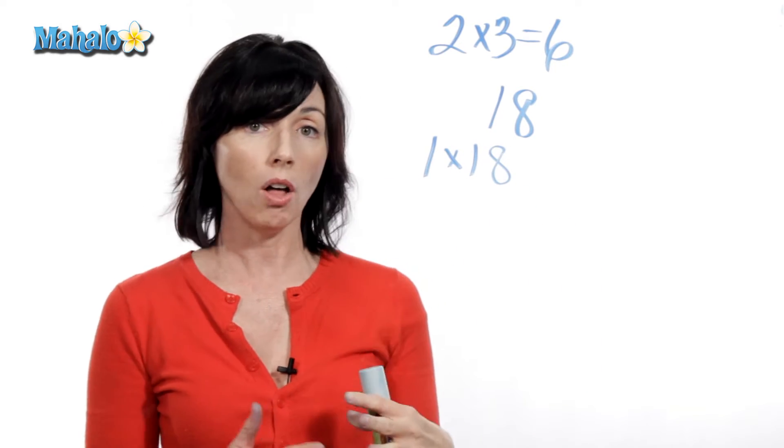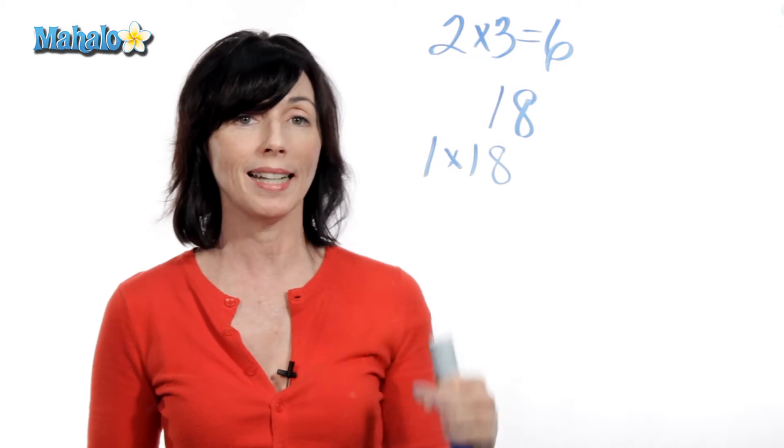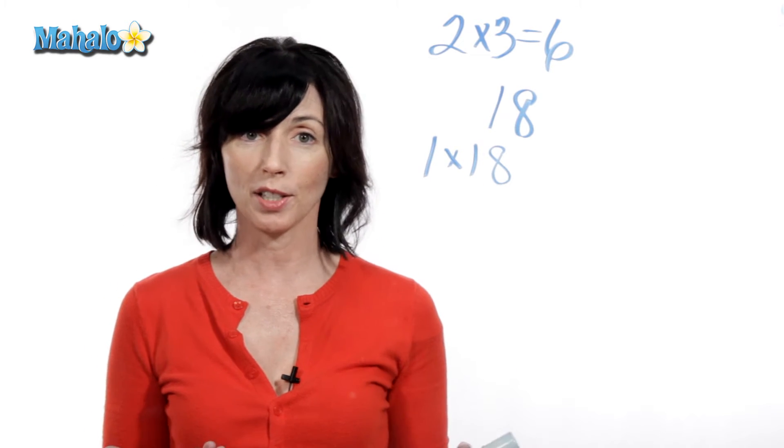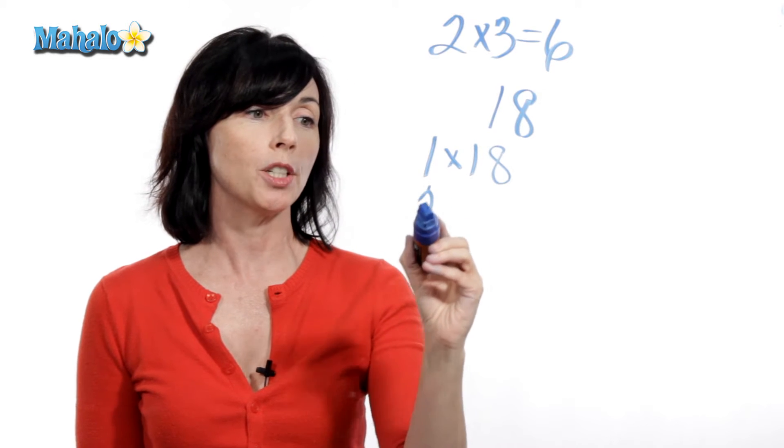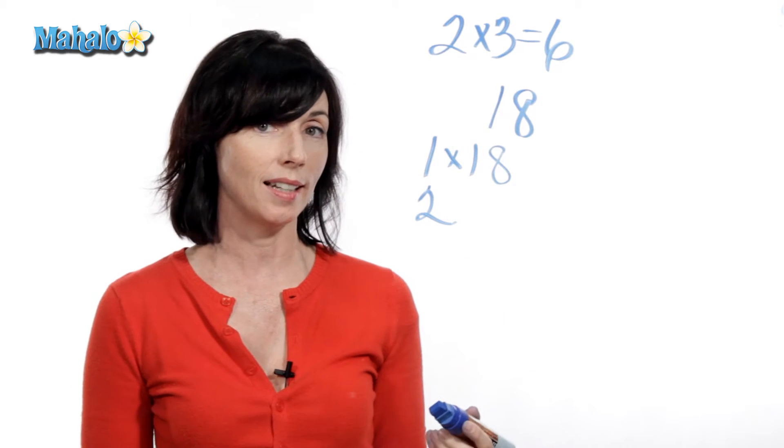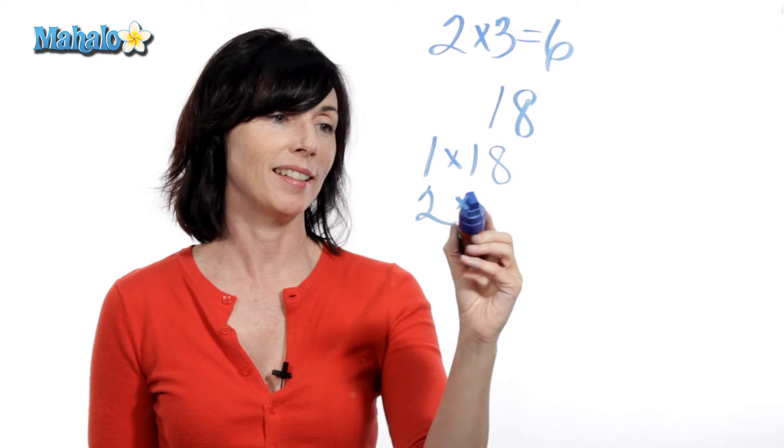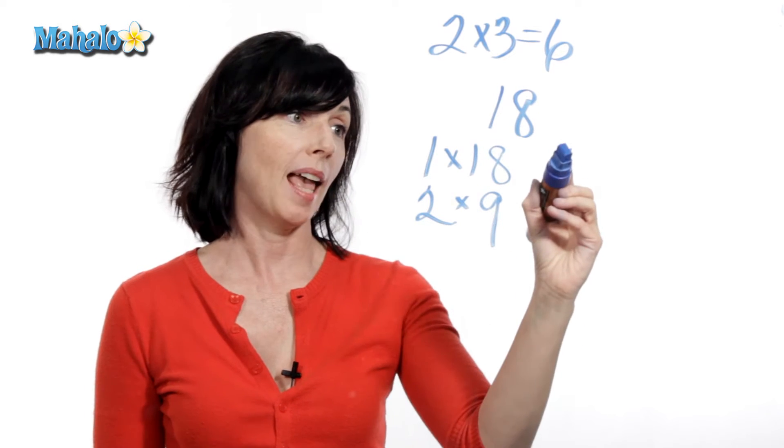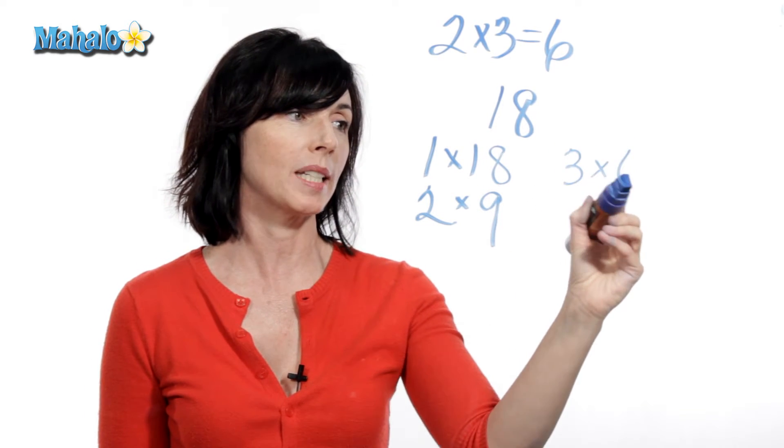Now, we need to check all the other whole numbers between 1 and 18 to find the rest of the factors. So, let's look at 2. Can you multiply 2 by another whole number and get 18? You can. You can multiply it by 9. What about 3? Yes, 3 times 6 is also equal to 18.